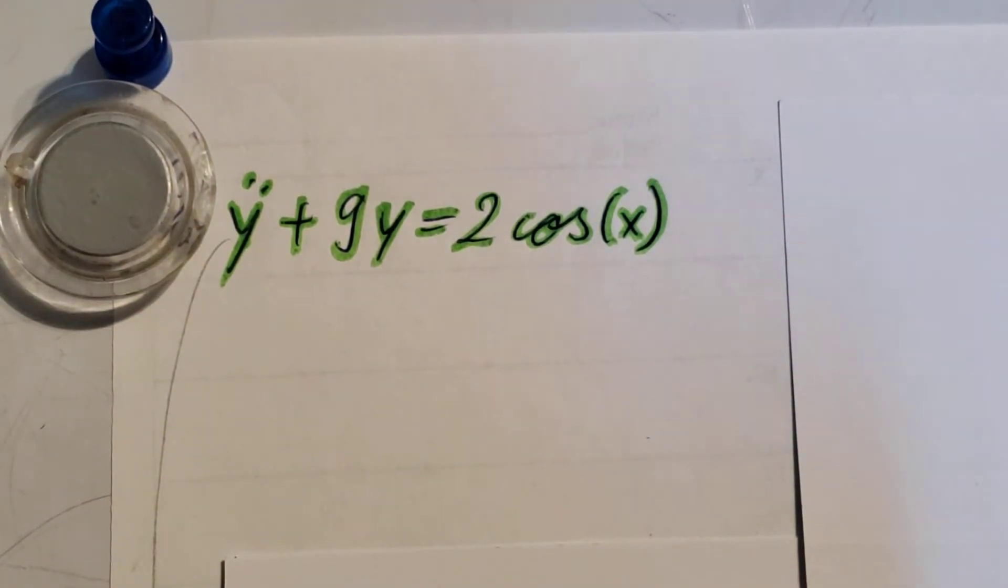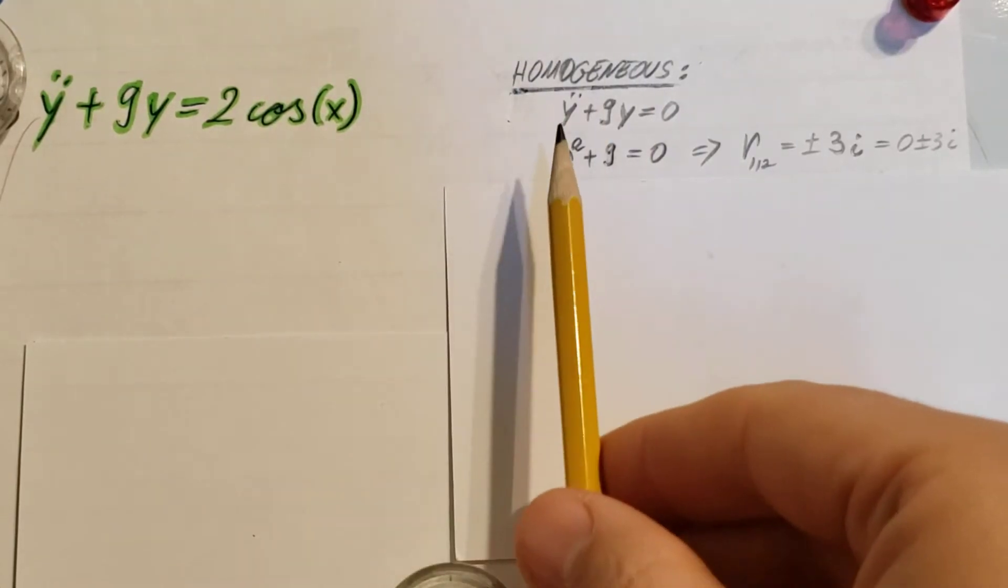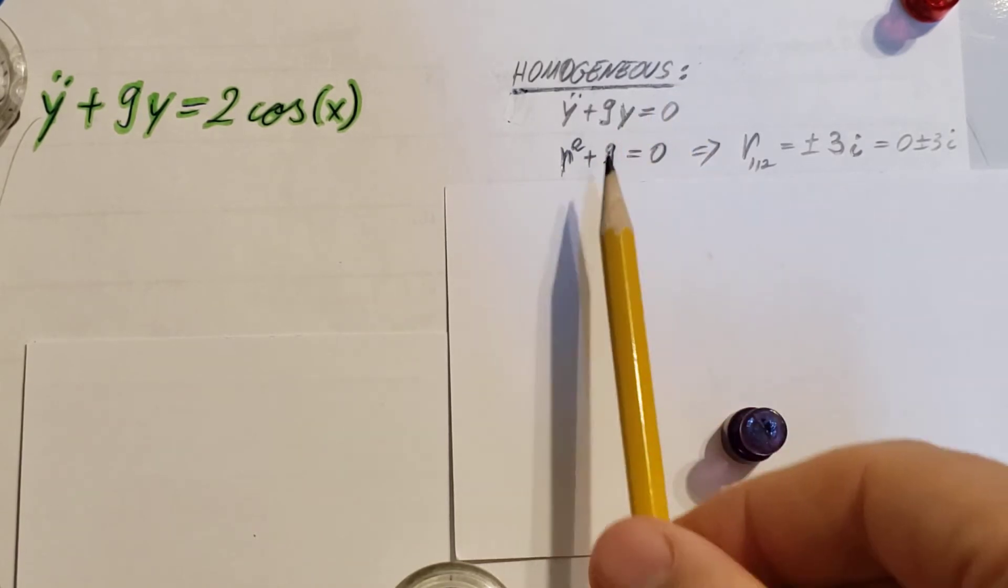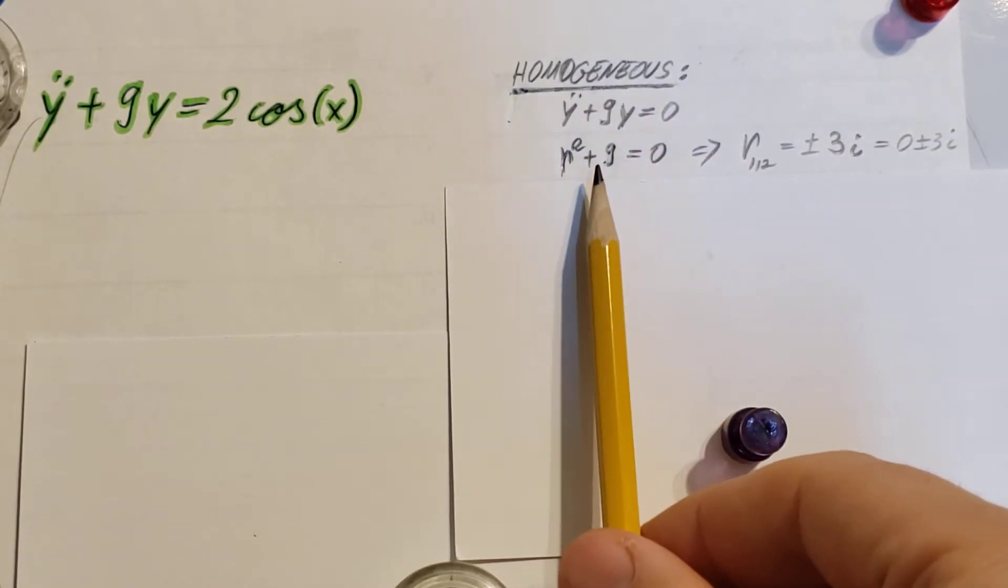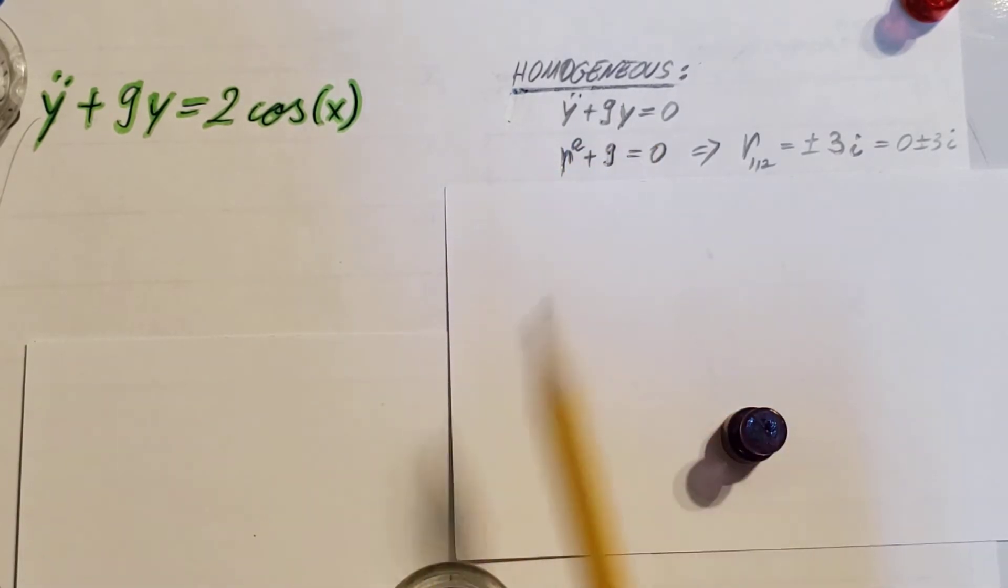First, let's find our homogeneous solution. Y double prime plus nine y equals zero. Our characteristic equation is r squared plus nine equals zero, and our roots from here will be plus minus three i.